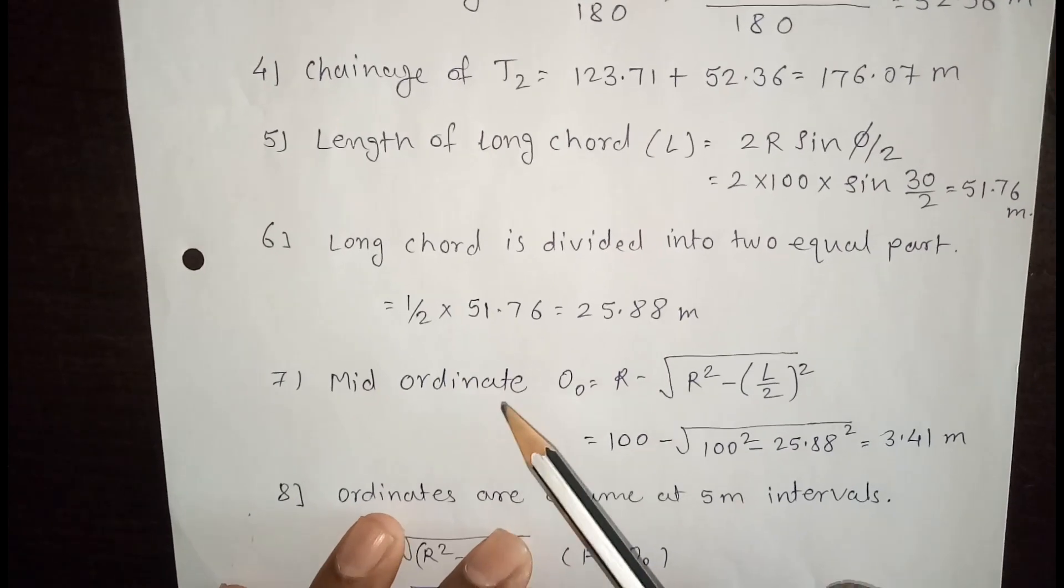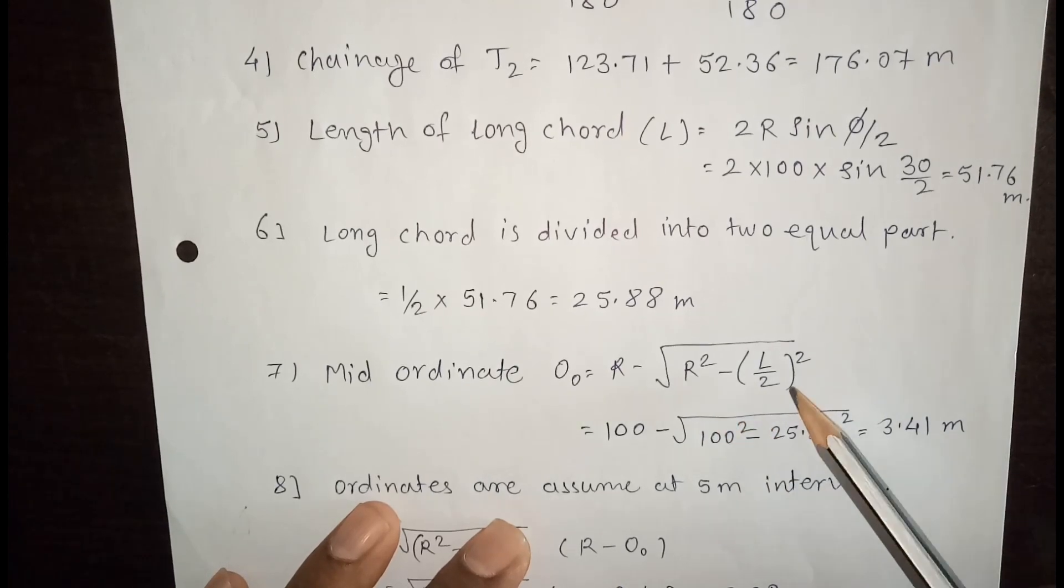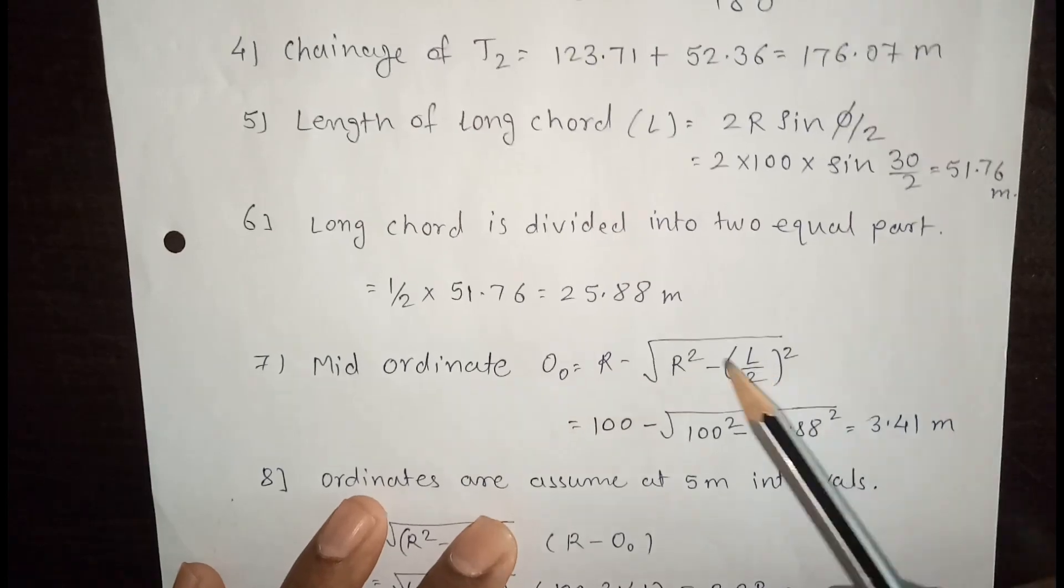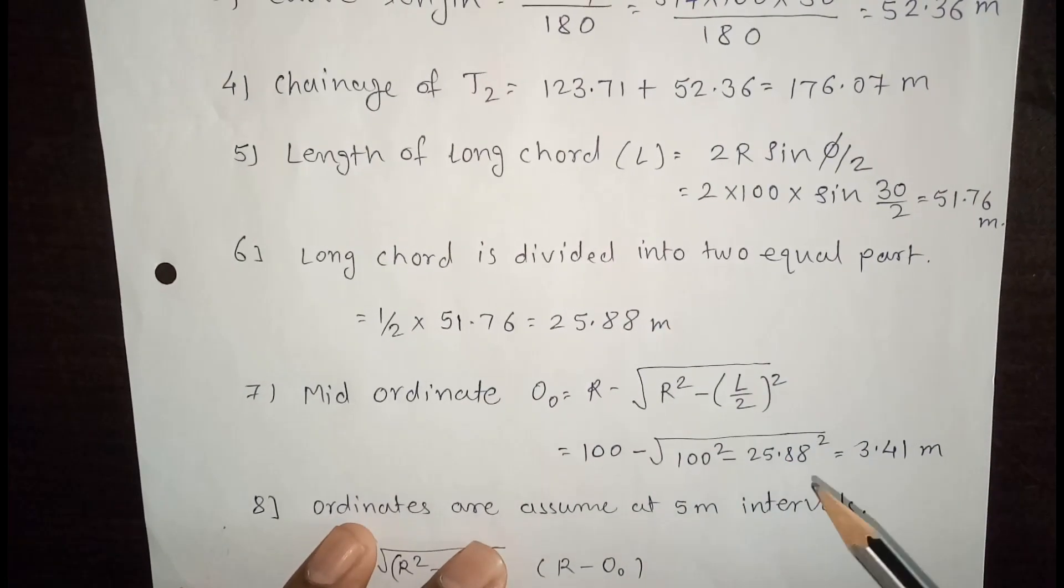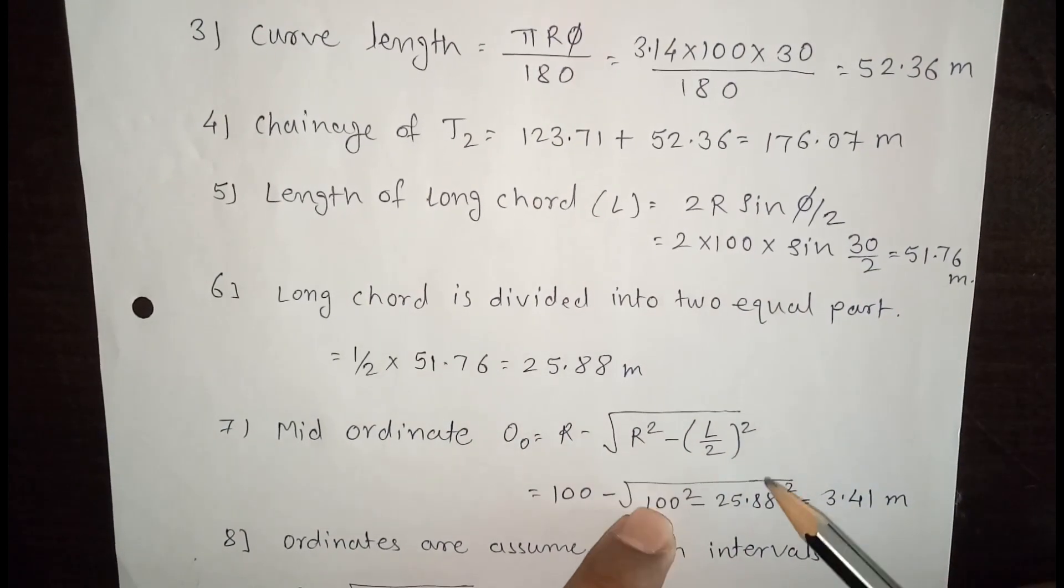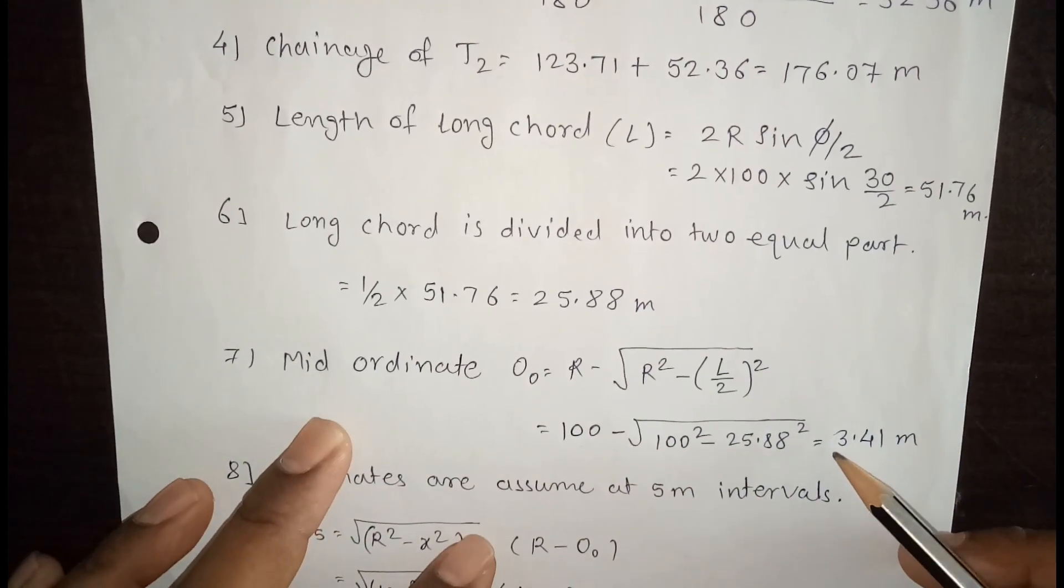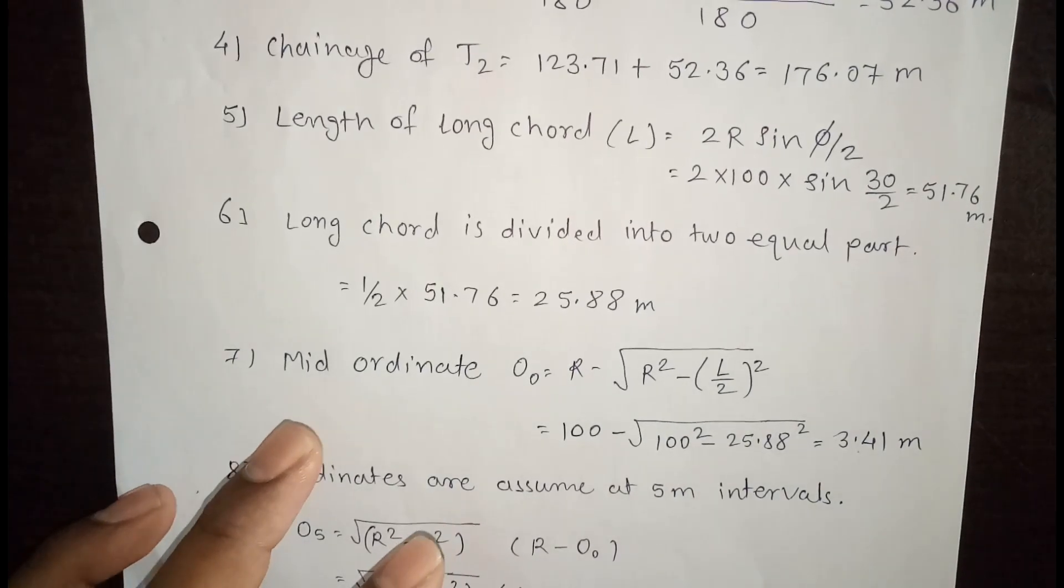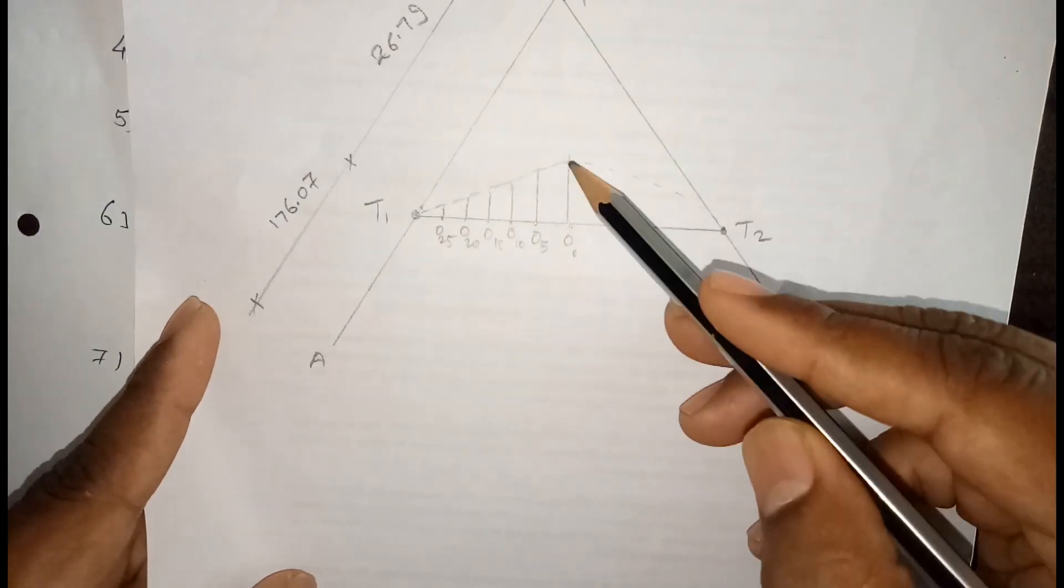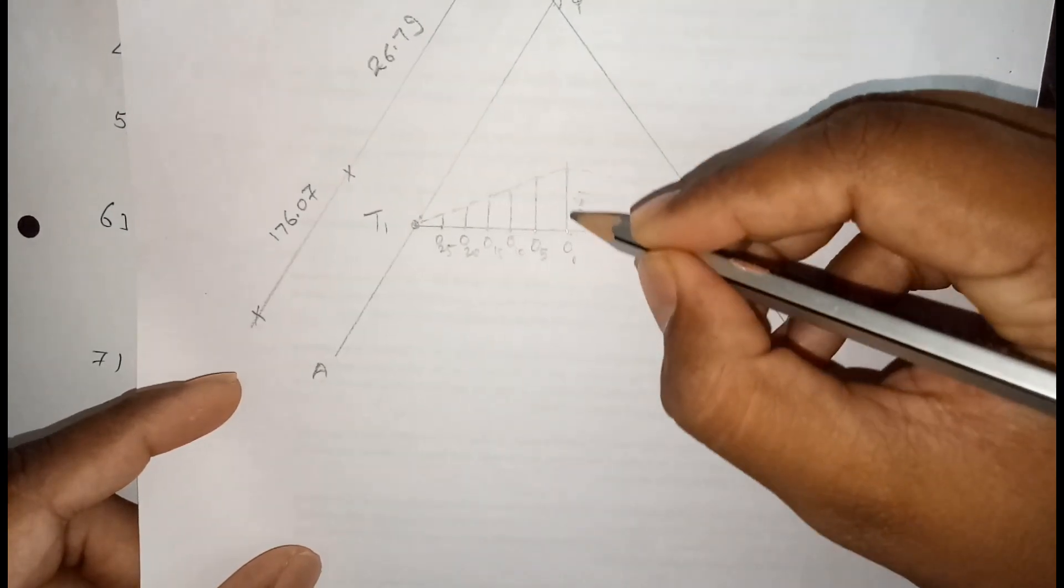Mid ordinate. Formula for mid ordinate, that is O0, is R minus in root R square minus L by 2 square. R is the radius, that is 100. And L is the length of long chord, that is total length. That is 51.76, so divided by 2 is 25.88. This is the height of mid ordinate, that is 3.41. This is my mid ordinate. O0 is the mid ordinate and this height is 3.41.